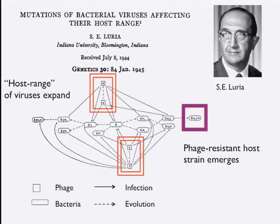But if you notice, way up at the end, Luria observed a phage-resistant host strain had emerged — meaning it was possible in lab conditions to evolve a host type for which they were unable to find a host-range phage mutant that could infect it. This leads to a tentative conclusion, one that became dogma for about four decades: that the co-evolutionary potential of bacteria exceeds that of phage. Therefore, ecologically, maybe not so interesting. Because you get this outcome of complete resistance.